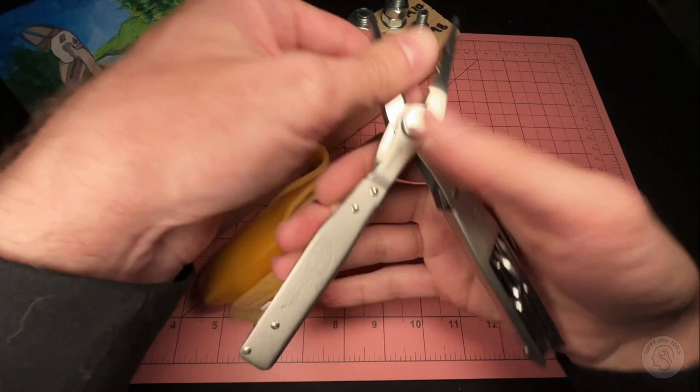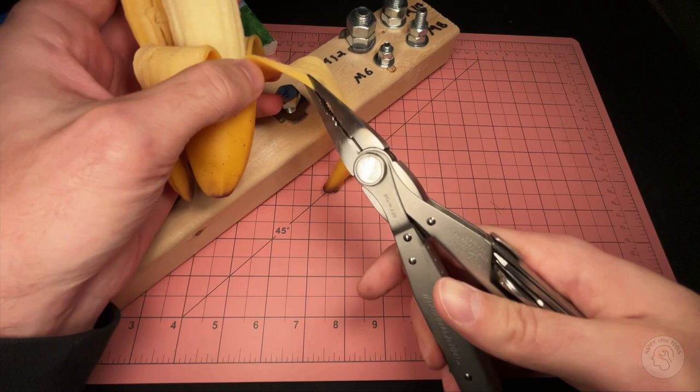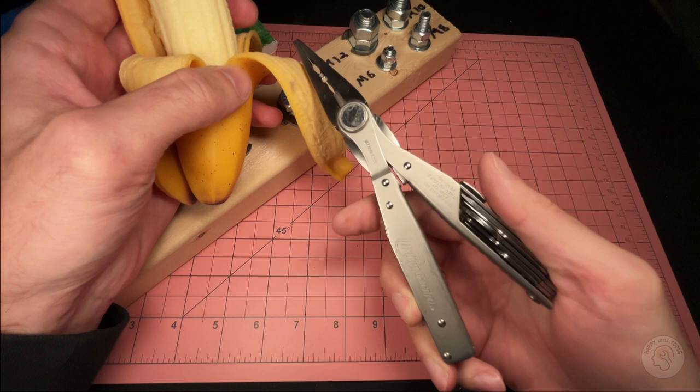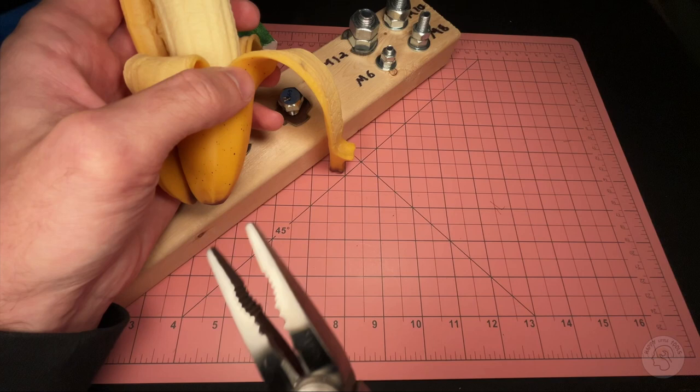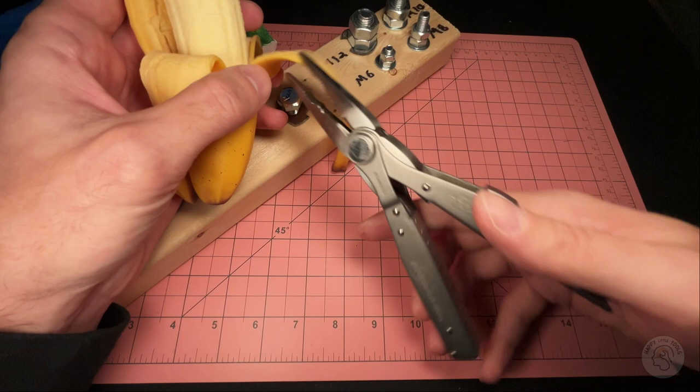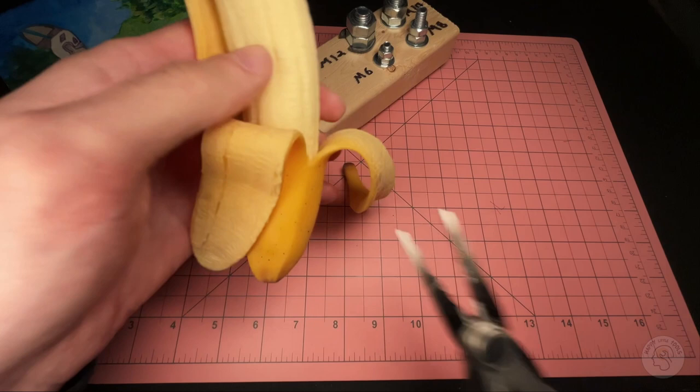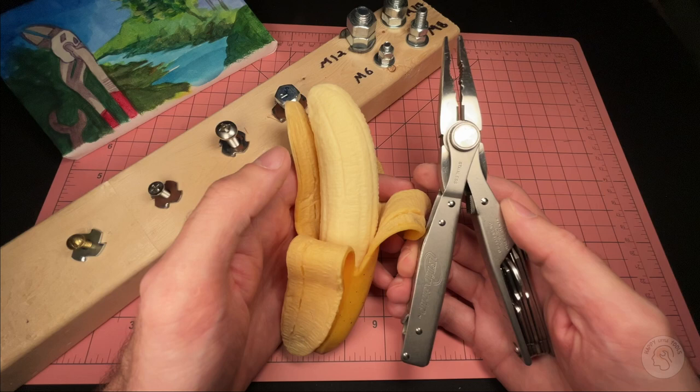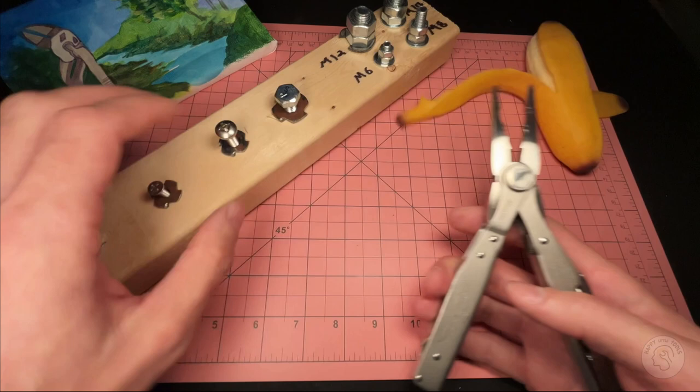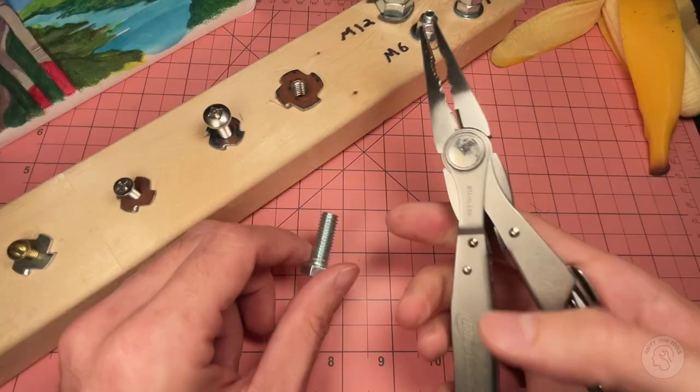You have to really choke all the way up on them to be able to grab what you're trying to grab with any kind of real precision and strength. The second you are coming down here, you lose first of all a lot of the strength, and I would say you lose a lot of opening at the end. This is kind of what I'm working with here, so I'm trying to grab this banana, which is fine. Banana for scale.